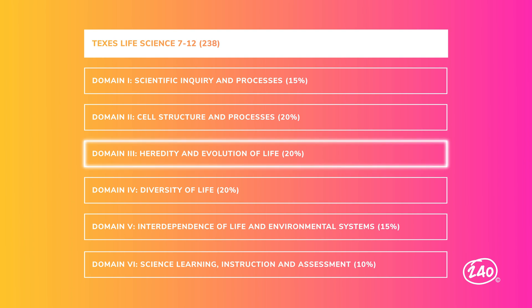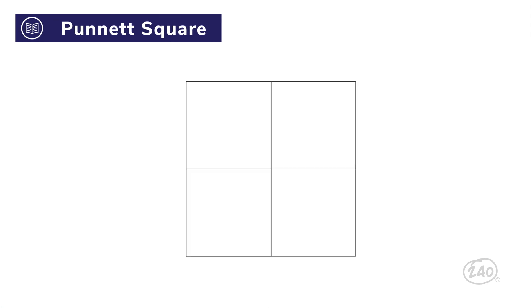But let's keep moving, right into domain three, heredity and evolution of life. This domain spans another four competencies, from the mechanisms of genetics to evolutionary change in Earth's history. So just all of Earth's history. No big deal, right? But for now, let's talk about Punnett squares. The Punnett square is a type of probability organizer to show you each possible combination from the alleles of two parents. Let's make a Punnett square together.